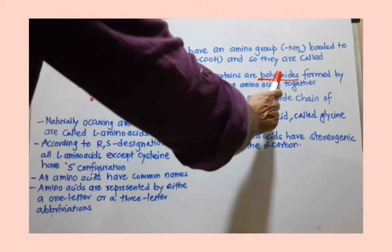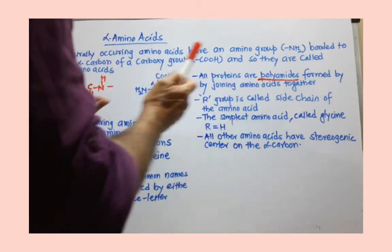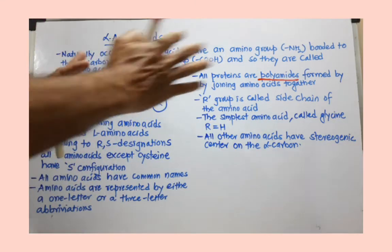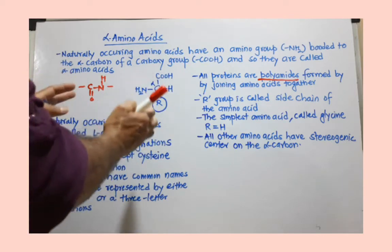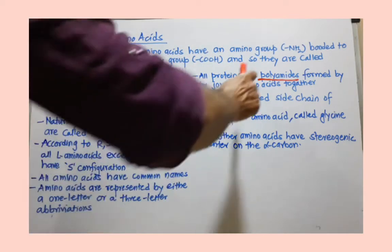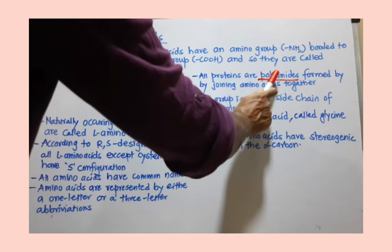Proteins are polyamides formed by the joining of amino acids together. Proteins are giant molecules formed after the joining of amino acids. You have to remember proteins as polyamides.